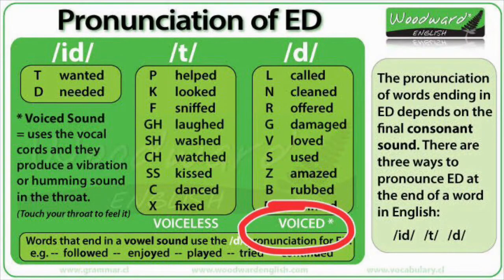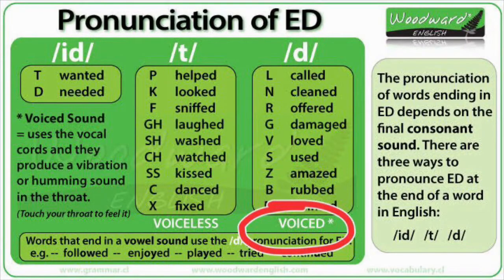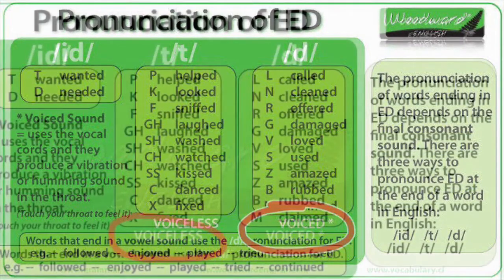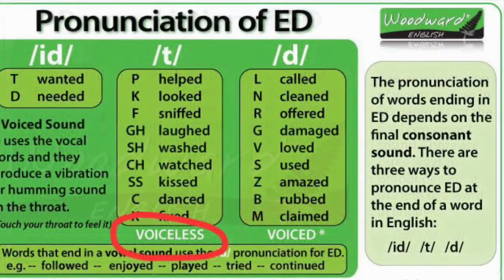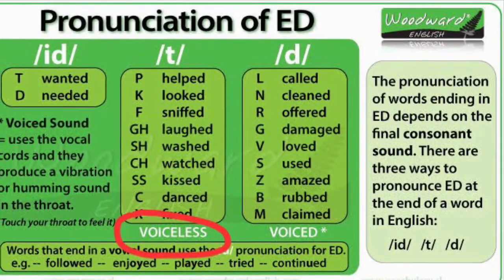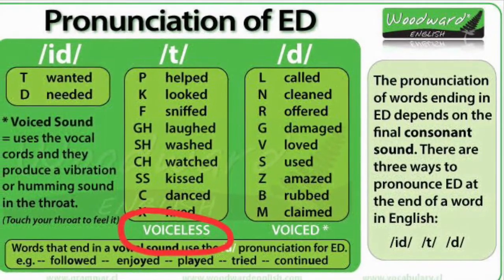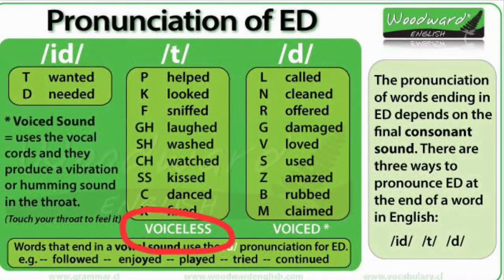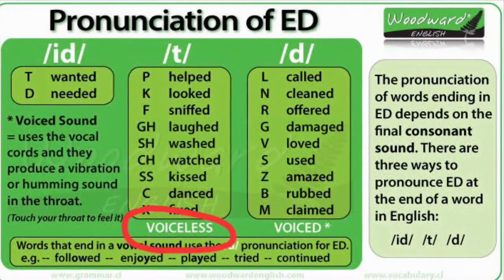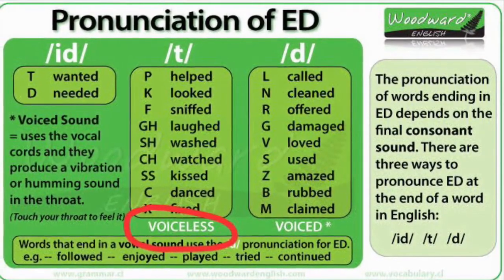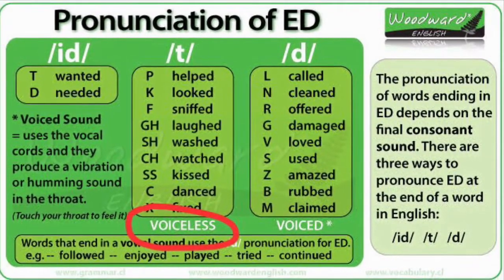For example, 'vow' — notice that 'v' has its own vibration, meaning it is a voiced pronunciation. Whereas 'f', as in 'froth', has no vibration, which is called voiceless. Listen and repeat for practice.